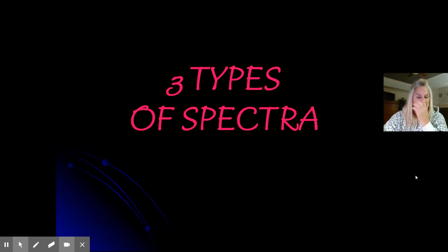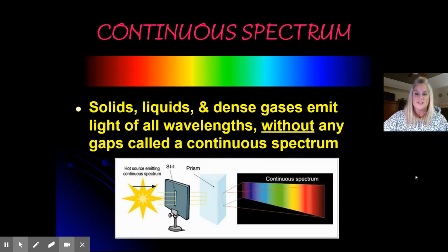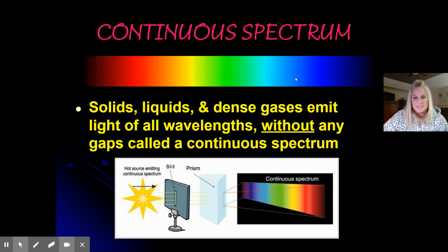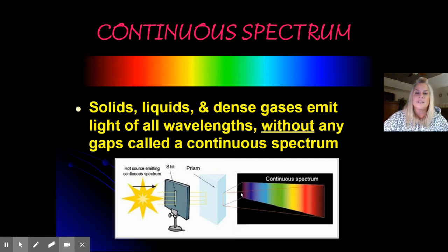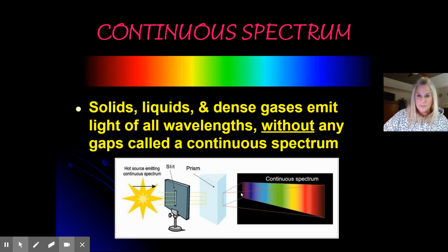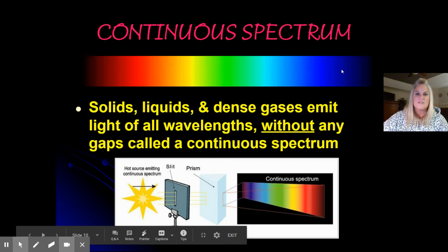There are three types of spectra. The first type is called continuous. A continuous spectrum looks like a rainbow — it goes from red, orange, yellow, green, blue, and violet, all blended together. Any solid, liquid, or dense gas will emit light of all wavelengths without any gaps, so we call it continuous. If the light being gathered is from a solid, liquid, or dense gas emitting all of it, we would see it as a continuous rainbow all blended together. Today I'm going to show you some examples of light that give off a continuous spectrum — look for whether it all blends together.